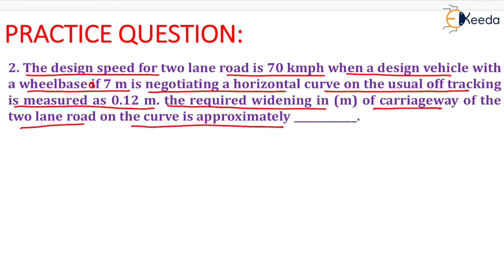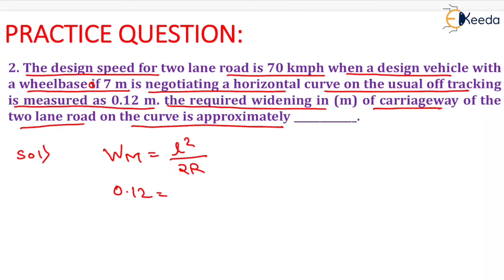Now, we need to calculate the value of extra widening. In the question, the mechanical widening is given, so we will write it as Wm equals L squared upon 2R. The value of mechanical widening is given as 0.12, and the value of length of vehicle is 7, so: 0.12 equals 7 squared upon 2R.